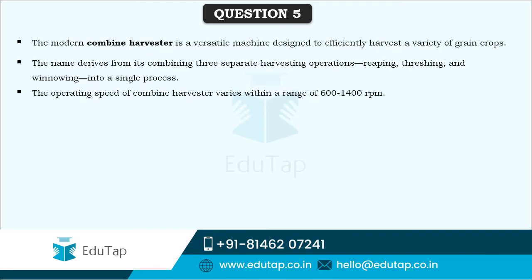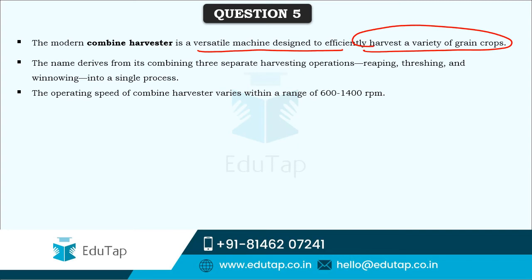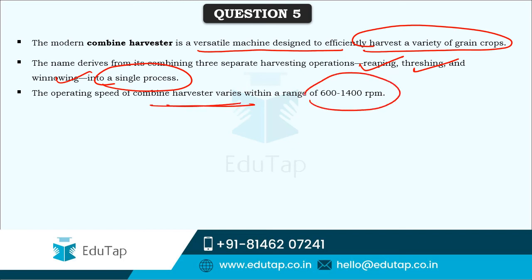The modern combined harvester is a versatile machine designed to efficiently harvest a variety of grain crops. It combines three separate harvesting operations — reaping, threshing, and winnowing — into one single process. The operating speed of the combined harvester varies within the range of 600 to 1400 RPM depending on the power it operates upon.